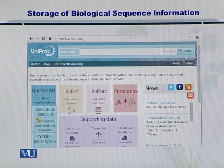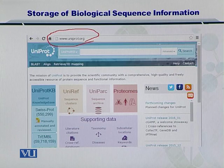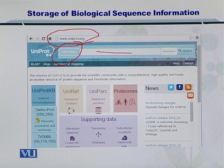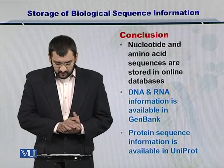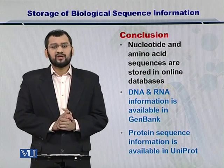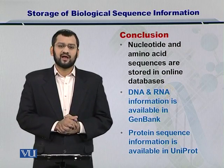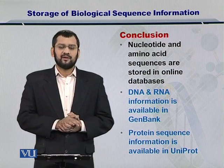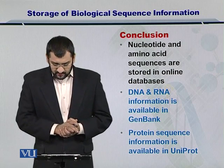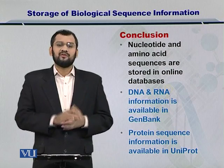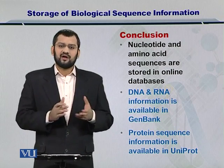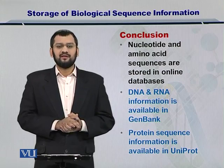This is the UniProt web page, also a publicly available database. UniProt stores the protein sequences, the post-translational modifications, and other related information. You can simply search it by providing the accession number for the protein or the sequence and other credentials. In conclusion, the nucleotide sequences — which include the DNA and RNAs — are publicly available for several species, and the database is GenBank. While for proteins, several proteins have been sequenced and these hundreds of thousands of protein sequences are available in UniProt.